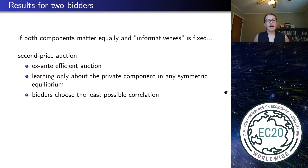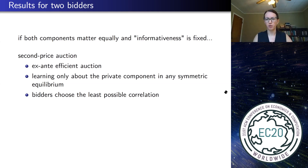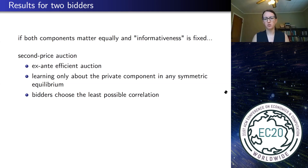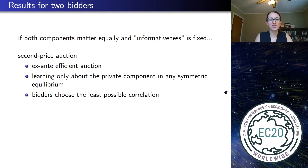Let me give you a preview of the results. Assume that learning about both components is equally informative — I don't want a bidder to choose one over the other just because the information quality differs. Let's assume that no matter what you learn about, overall it's more or less the same informativeness. Then in the second price auction, bidders are only going to learn about their private component. There's not going to be any correlation — bidders will choose the least degree of correlation available to them. This is good news for the second price auction, which will be the ex-ante efficient auction format.